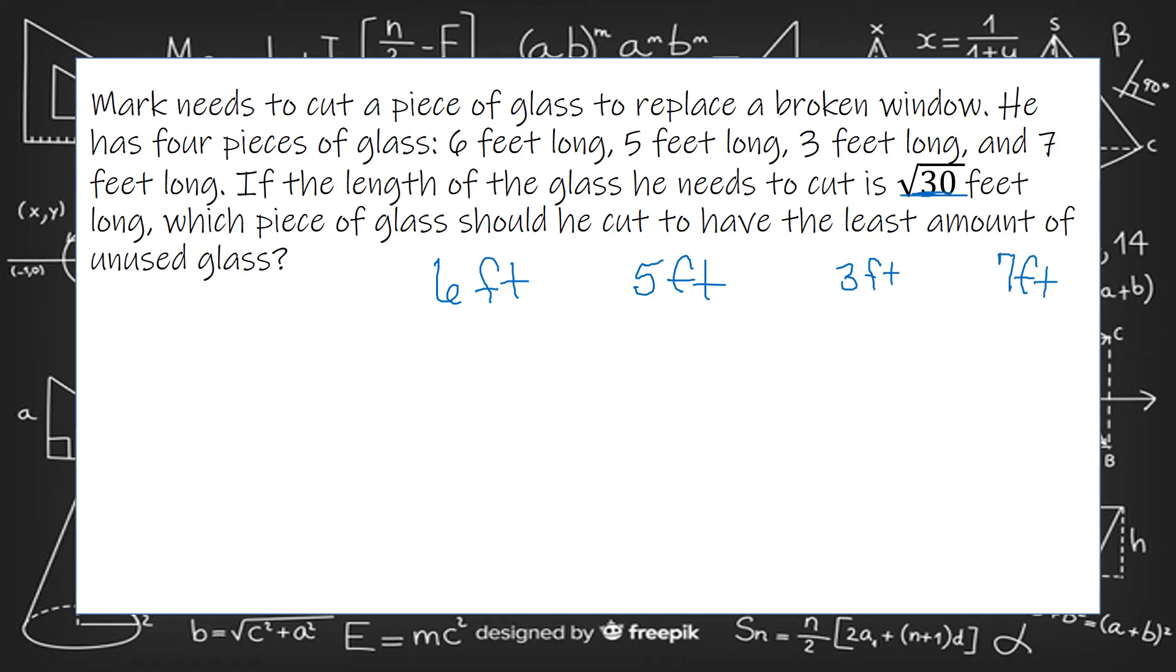We're looking at perfect squares here. So I could say that this is also the square root of 36 feet long. That's equivalent. 5 times 5 is 25, so the square root of 25 feet long. 3 feet is the square root of 9 feet, and 7 feet is the square root of 49 feet.